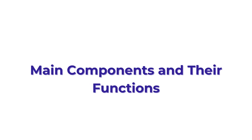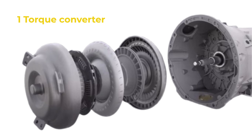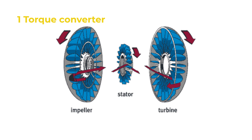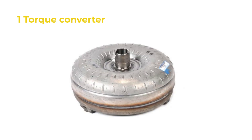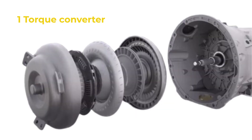Next, let's examine the main components of an automatic transmission and understand their individual roles in the system. The torque converter connects the engine to the transmission, using fluid dynamics to transfer rotational power to the transmission input shaft. It also allows the engine to keep running while the vehicle is stationary and enables smooth acceleration from a stop.